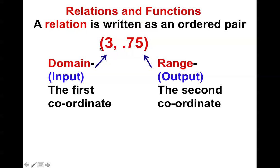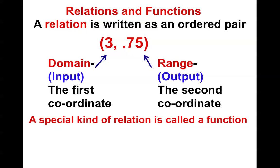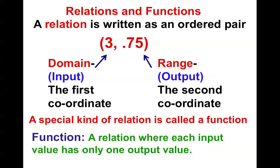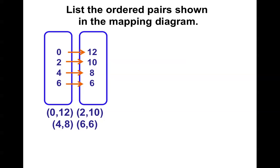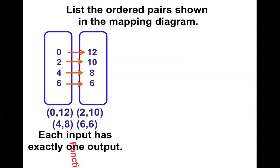We've talked about relationships and functions. This ordered pair tells about a relationship — the cost of gumballs to their price. A special kind of relationship is called a function: a relationship where each input value has only one output value. I like to say that each question has only one answer. Notice this set of ordered pairs — what number links with 0? Answer: 12. What number links with 2? Answer: 10. Each question has only one answer, so since each input has only one output, it is a function.